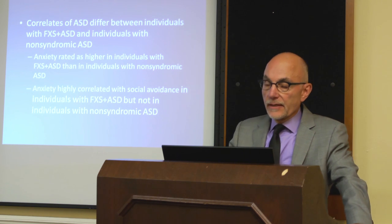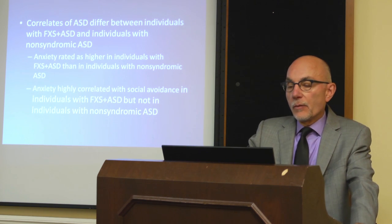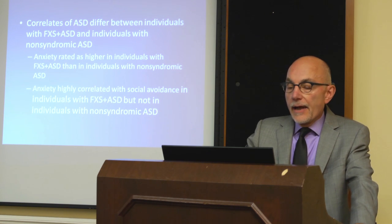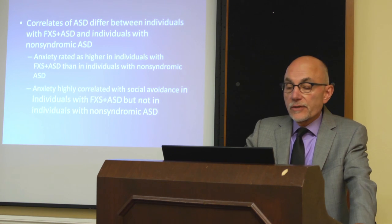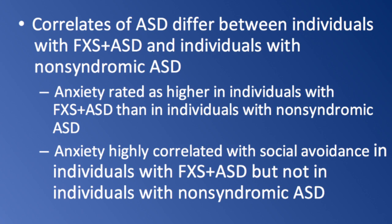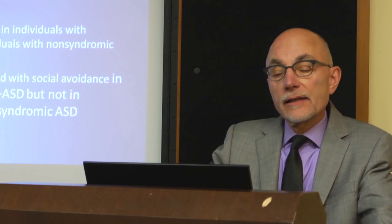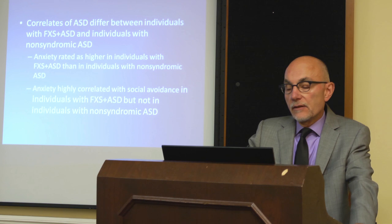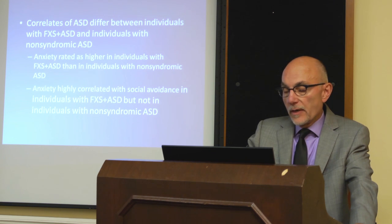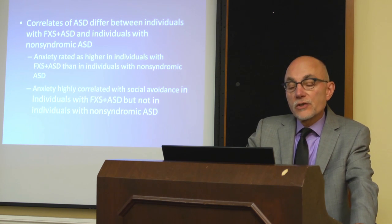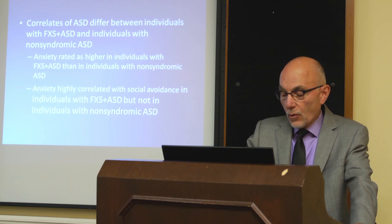In another study led by Dr. Angela Thurman in our lab, we looked at the correlates of autism in individuals with fragile X and comorbid ASD versus individuals with non-syndromic ASD. Anxiety was rated as higher in the fragile X and comorbid autism group. Importantly, anxiety was highly correlated with social avoidance in individuals with fragile X and comorbid ASD, but not in those with non-syndromic ASD — even though social avoidance is considered a core feature of autism.